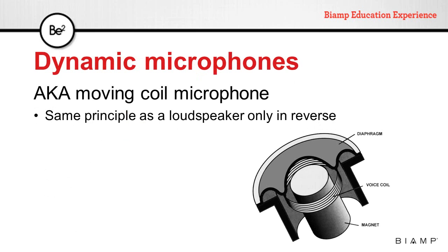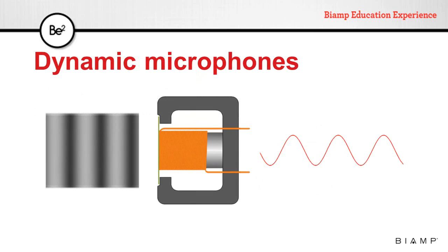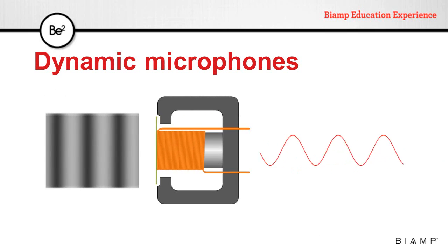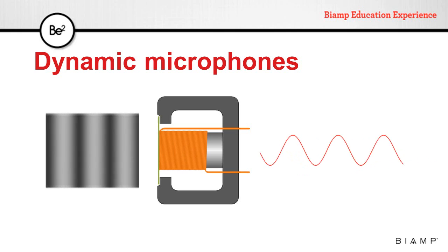Dynamic microphones, also known as moving coil microphones, use the same principle as a loudspeaker only in reverse. These microphones have a diaphragm and a voice coil that can move freely over a magnet. When sound arrives at the diaphragm, both the diaphragm and the voice coil will move over the magnet, inducing a current in the voice coil.